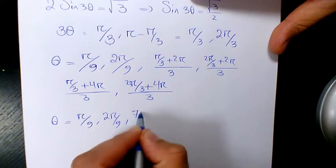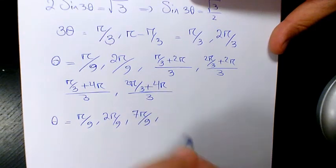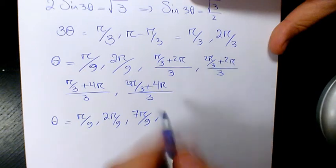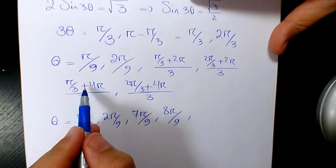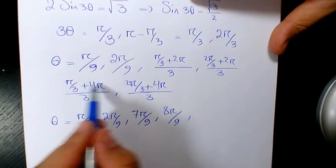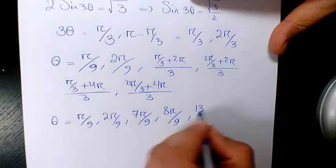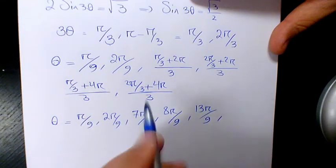Here is going to be 7π over 9, 8π over 9. Then we're going to have 13π over 9.